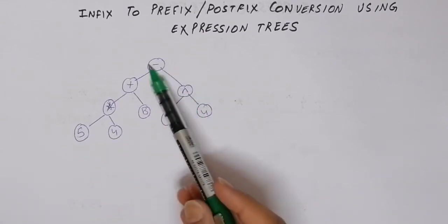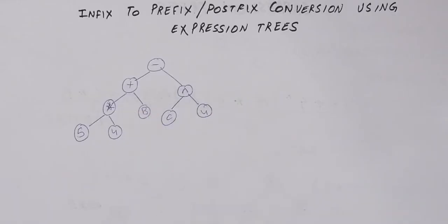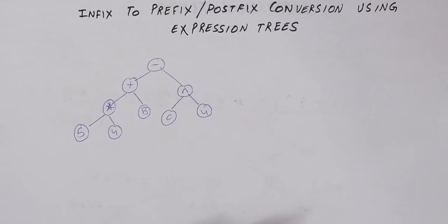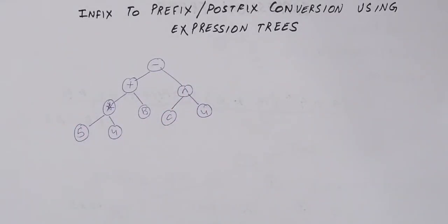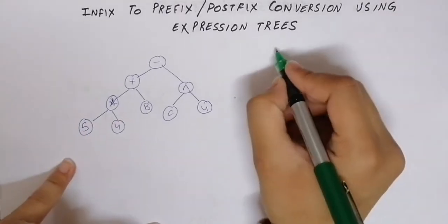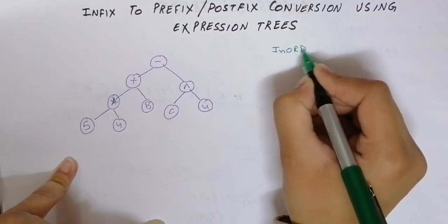All the operands are at leaf nodes and all the operators are at intermediate nodes. To figure out which expression this tree represents, we need to look at the algorithm that will help us traverse this expression tree. There are three different traversals: in-order traversal, pre-order traversal, and post-order traversal.